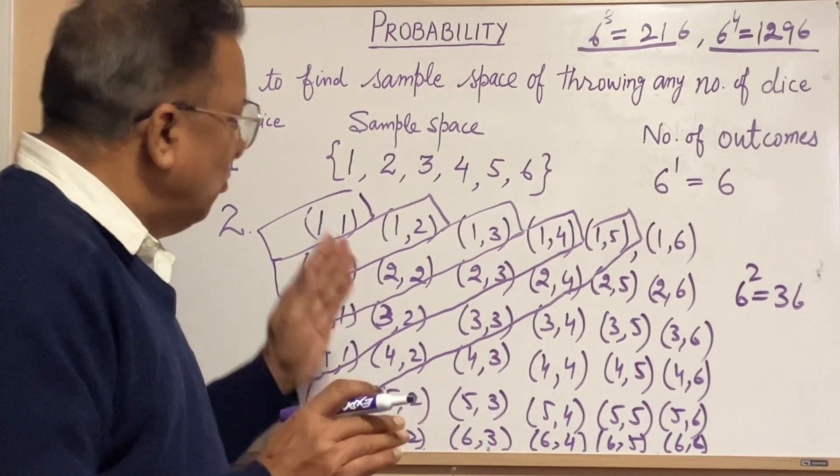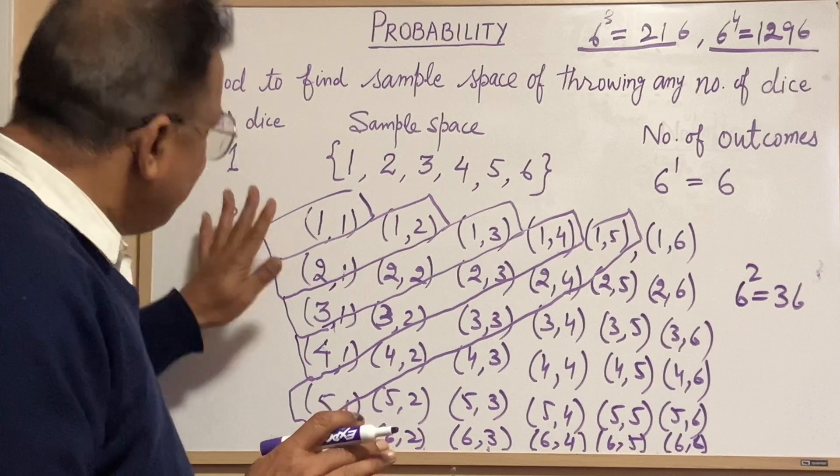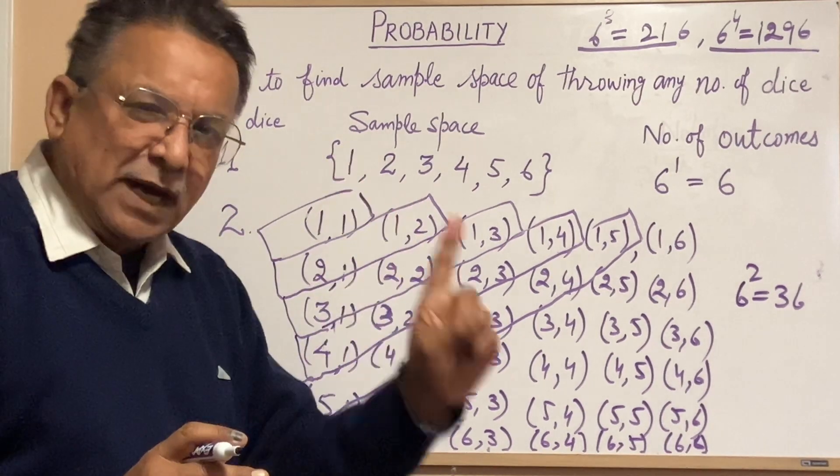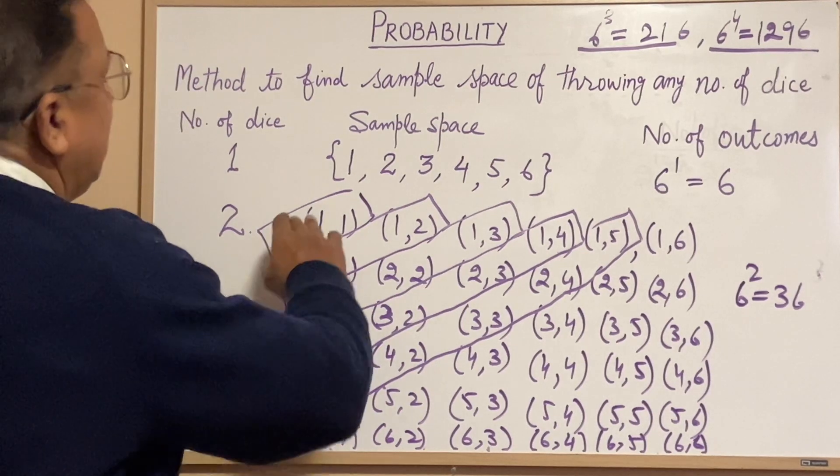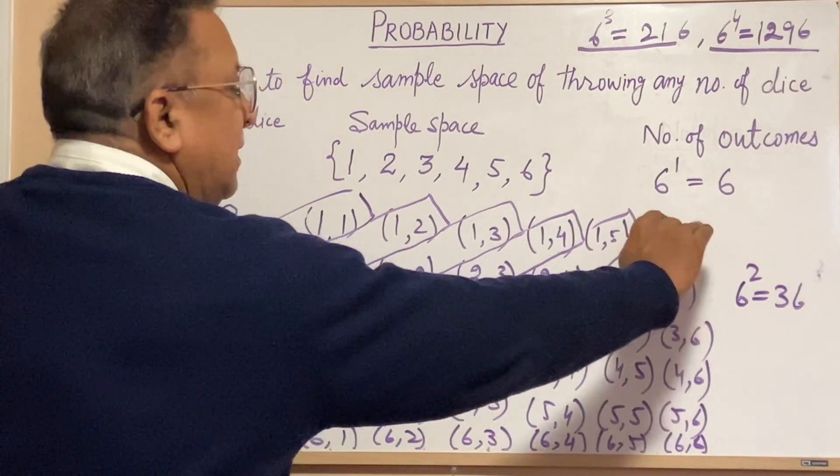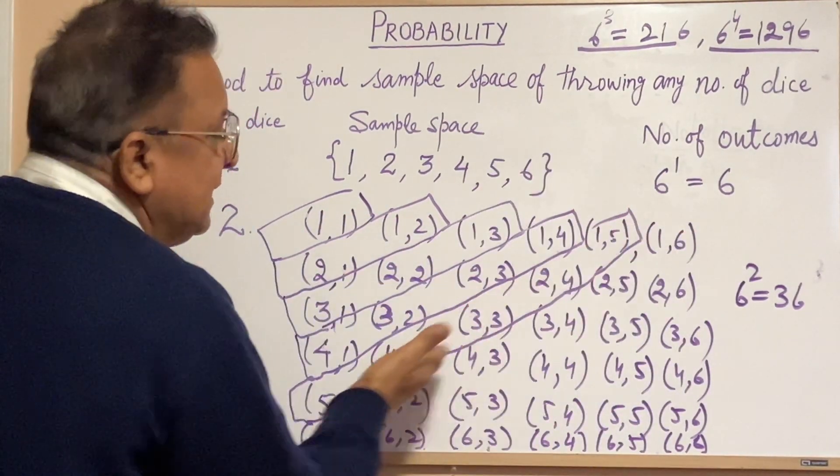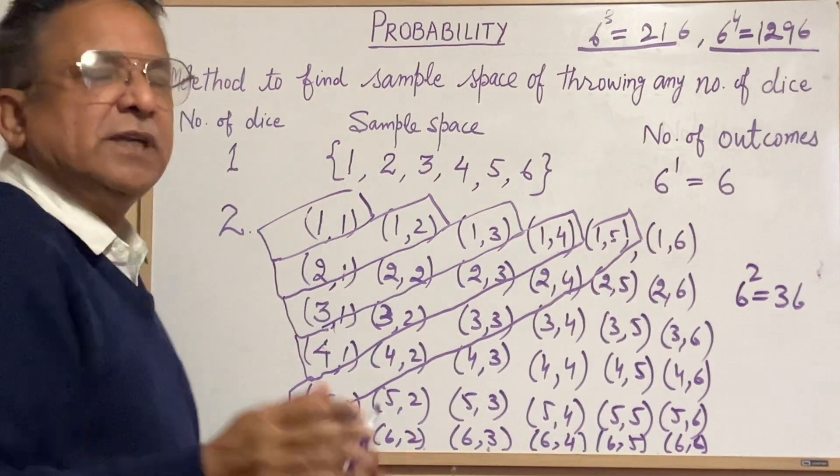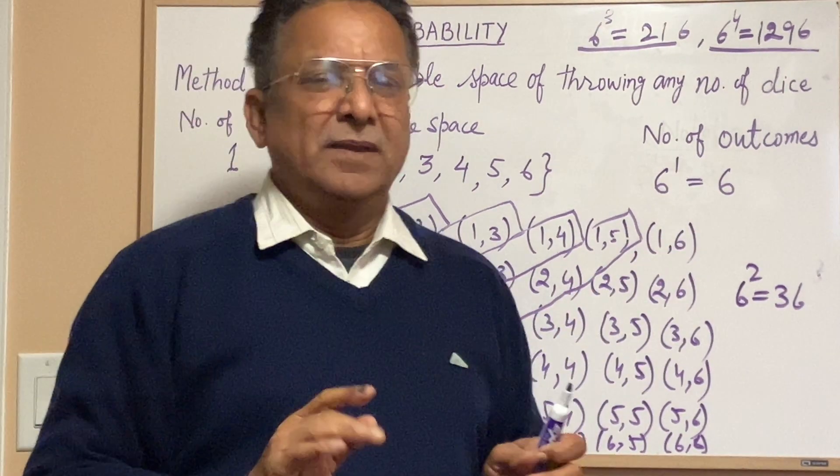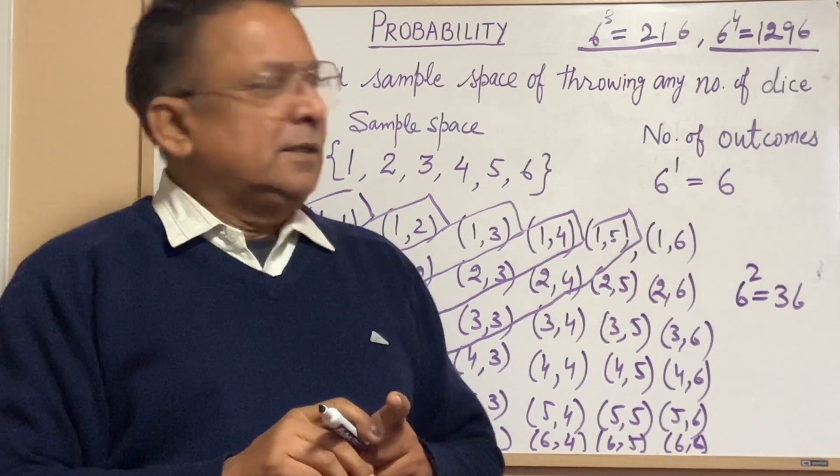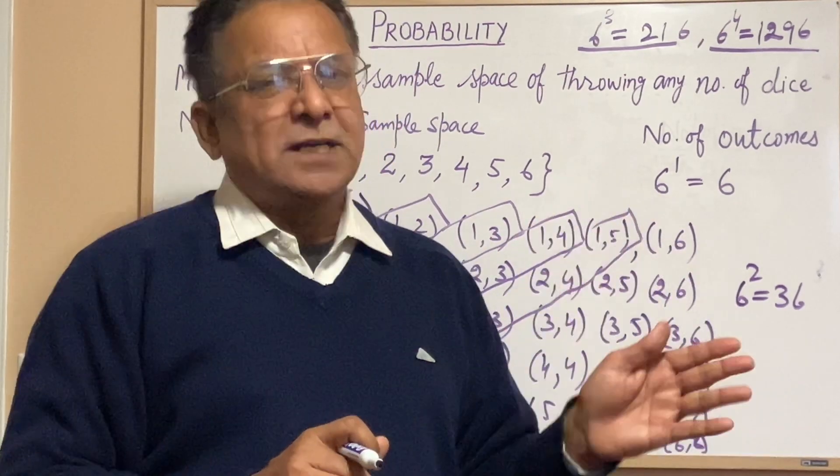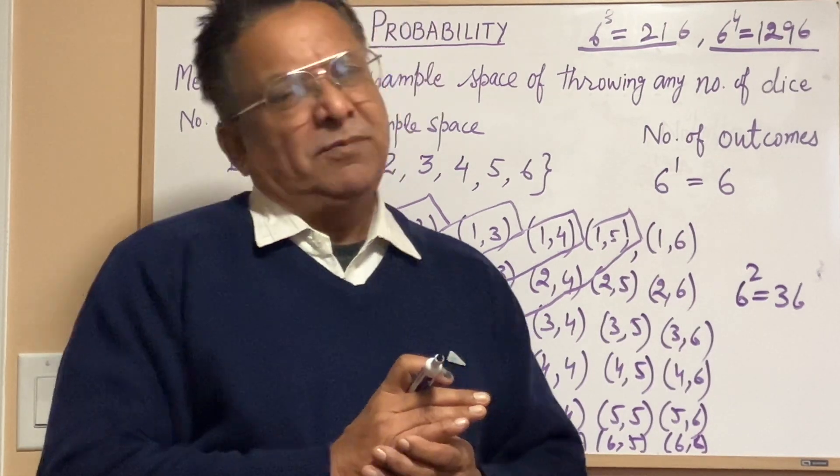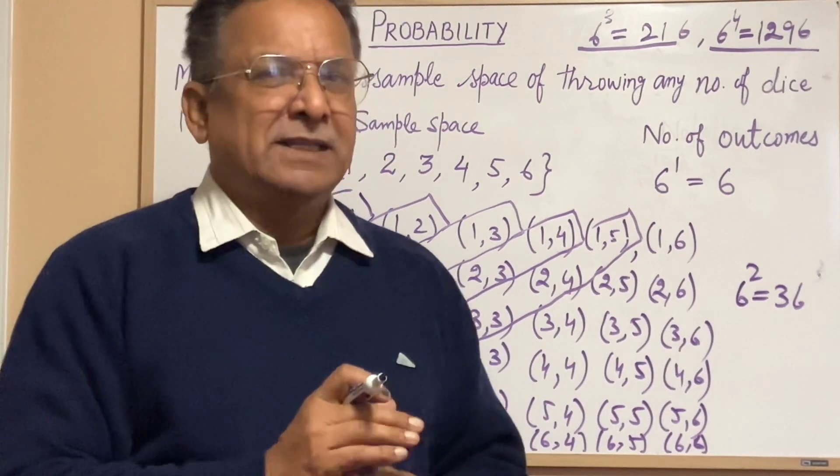Be careful when we write sample space of throwing one dice, two dice, three dice. You have to take sample space in this way so that we can easily detect any case whatever you like. I'm sure you followed my point, and please subscribe my Alpha Beta YouTube channel. Thank you very much.